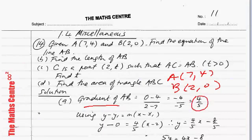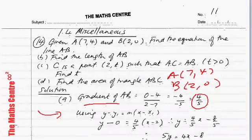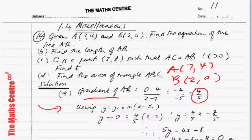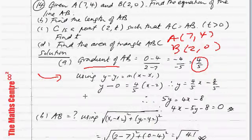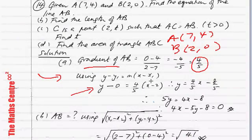Use Y-Y1 equals M times X-X1 to write the equation of AB. I have picked the point B which is (2,0). So Y1 will be 0, that's what you see here: Y-0. The gradient 4/5 times X-X1, X1 is 2. Clean this up, use the calculator, and you will get the equation of AB as Y equals 4/5 X minus 8/5.